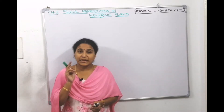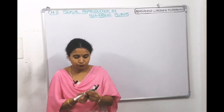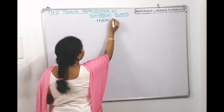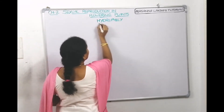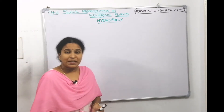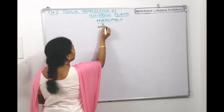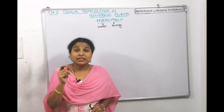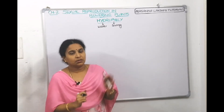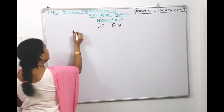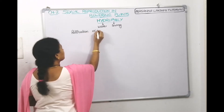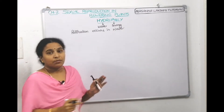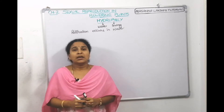In this lecture we will talk about the next abiotic agent which is hydrophily. Hydro means water, philly means loving. Hydrophily is a type of pollination which is mediated by water — pollination occurs in water, and water is the agent which helps in pollination.